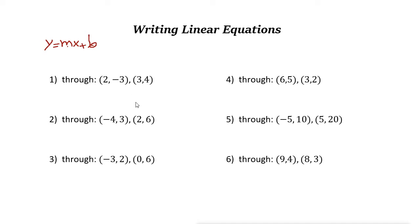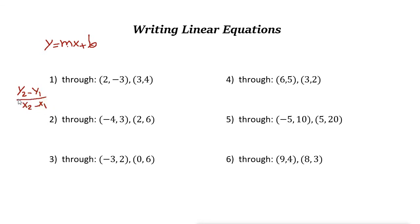Let's take a look at these examples. Let's say we have two points. We want to find the slope, then write the equation of the line. We know the formula for slope is y2 minus y1 over x2 minus x1, and that equals m, the slope.